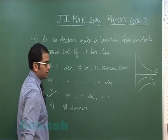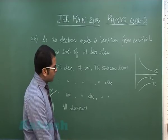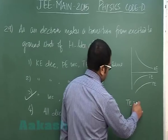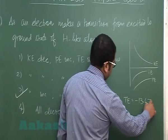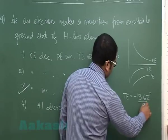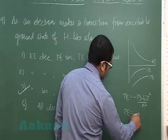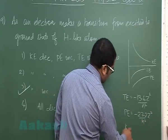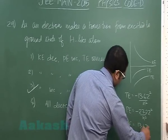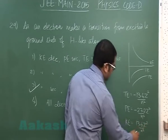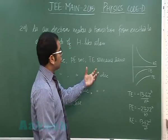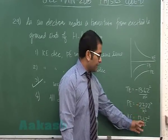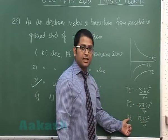That leads us to option number 3. If you want to go mathematically: total energy is −13.6 Z²/n², potential energy is −27.2 Z²/n², and kinetic energy is 13.6 Z²/n². Since Z is the same and the electron is transitioning from excited to ground state, n is decreasing. So you can easily see that if n decreases, kinetic energy increases, and the negative sign makes the difference for potential and total energy.